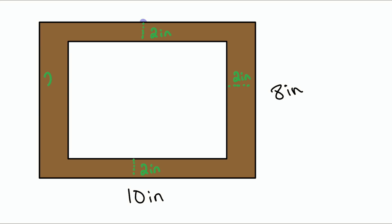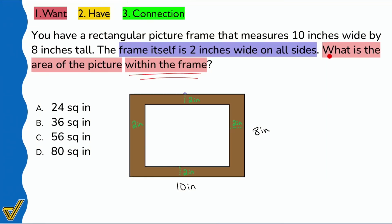That's what they're trying to tell us. We're trying to say that the frame is 2 inches on all sides. But remember, what is it that we're looking for again? I heard the word area. We see that it says what is the area. But we're looking for the area of the picture, not the area of the frame, but the picture inside of the frame. And it's a rectangle.